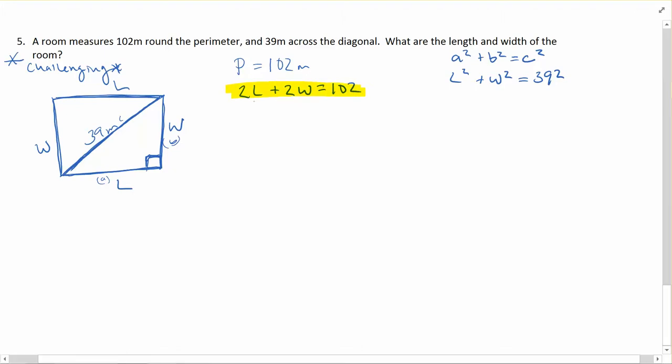If I come back to my first equation with the perimeter, this one's a little bit easier to deal with just because there's no squares in it. First thing I notice is that everything in it can be divided by 2. So if I divide both sides by 2, 2L divided by 2 is just L, 2W divided by 2 is just W, and 102 divided by 2 is 51. If I do some rearranging here, minus W from both sides, the length will be equal to 51 minus W.